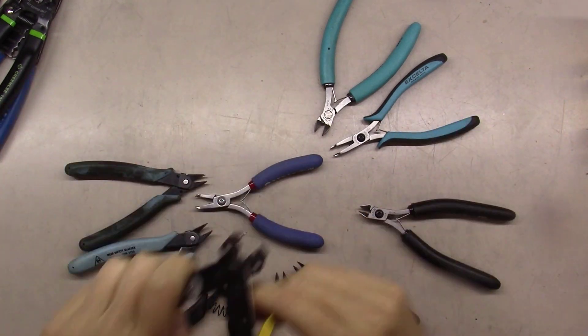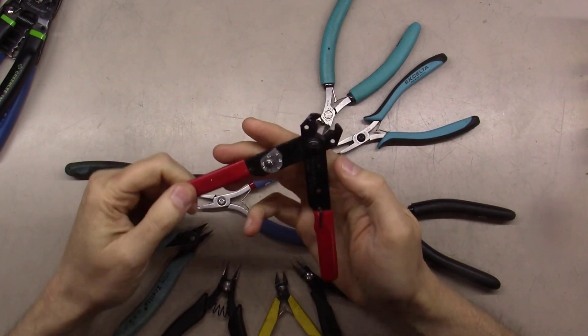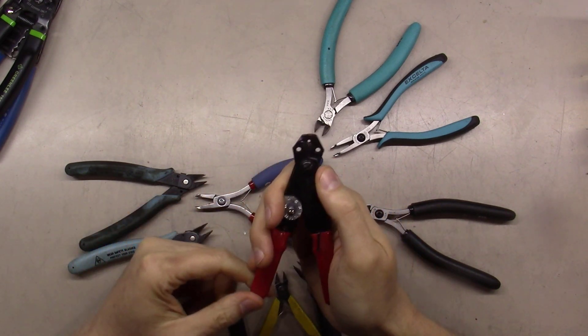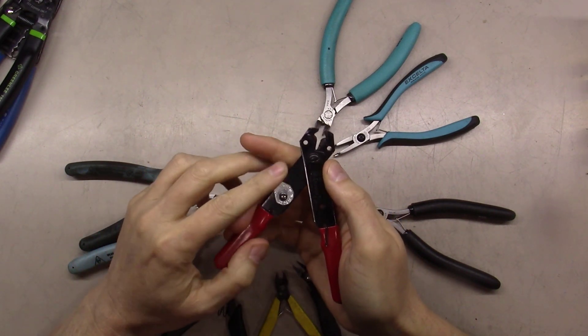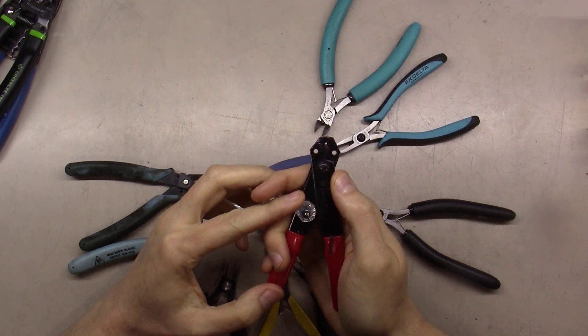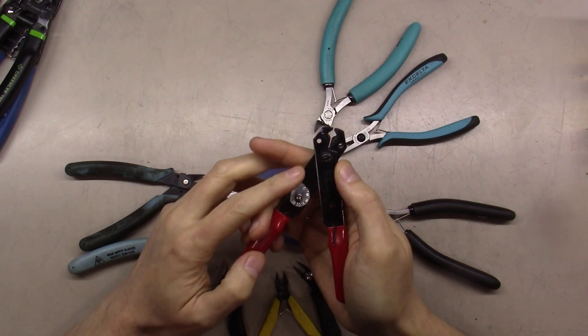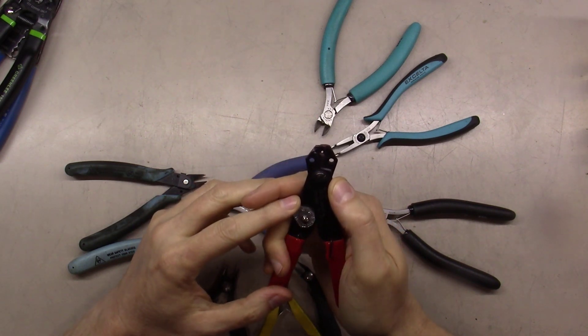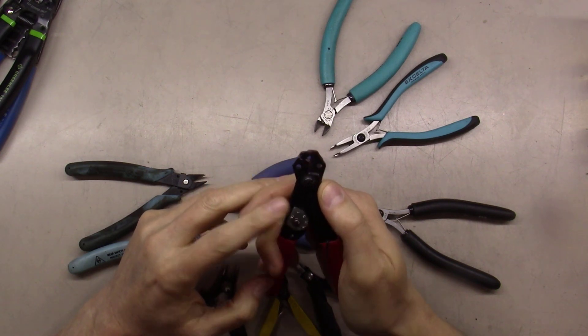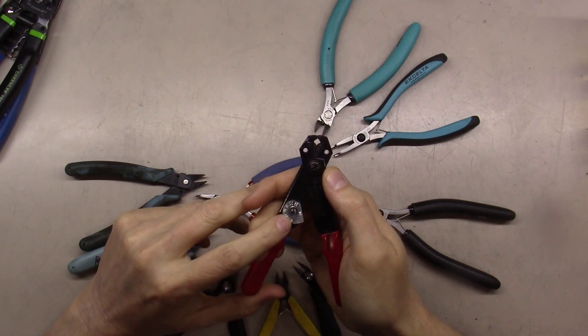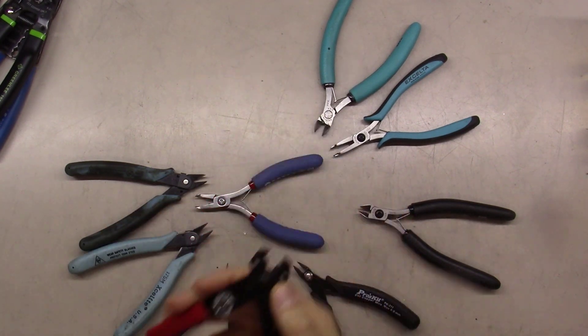As we move further forward into other wire strippers here, we've got these. Looks like these are GB Electronics. Nothing wrong with these. I do find this thing here to be a total pain in the tail. You're supposed to turn it to 16 gauge wire. The problem is this thing spins freely, so it never really lands right there on the spot, and you end up cutting your wire in half accidentally.